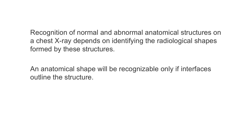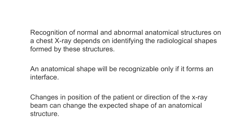In the example of the aortic arch, we could not identify the medial border because the medial border of the aorta has the same radio density as other mediastinal structures. Changes in position of the patient or direction of the x-ray beam can change the expected shape of an anatomical structure.